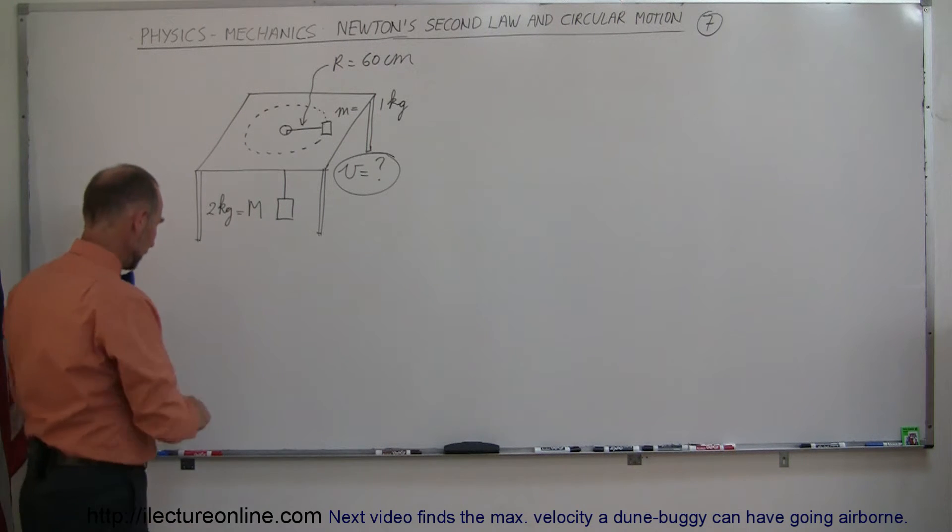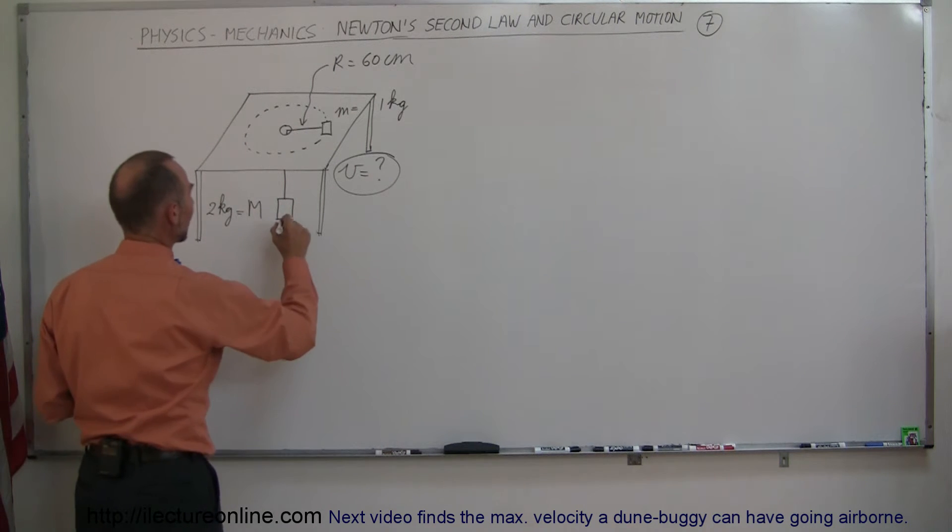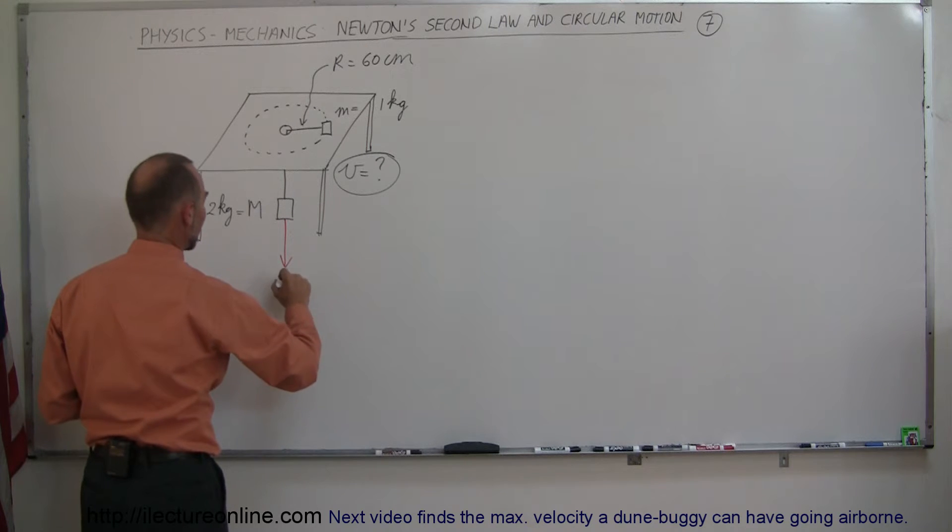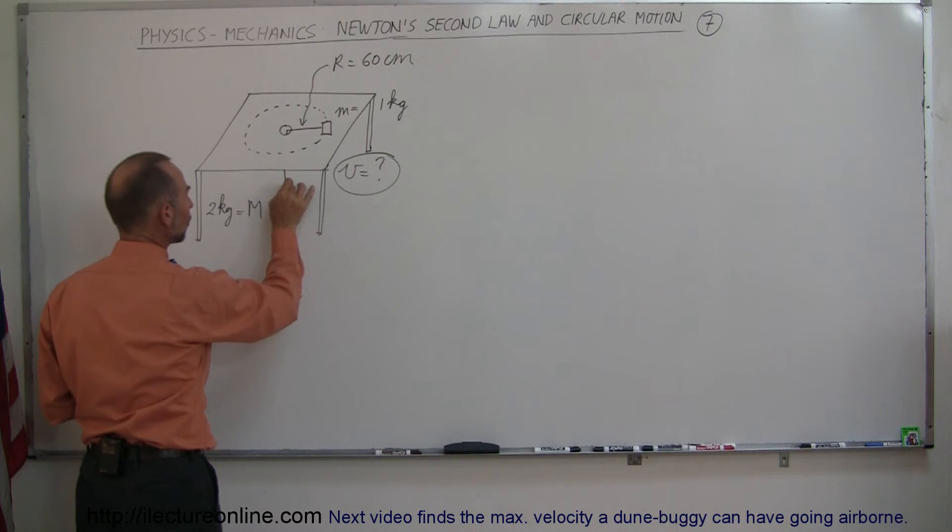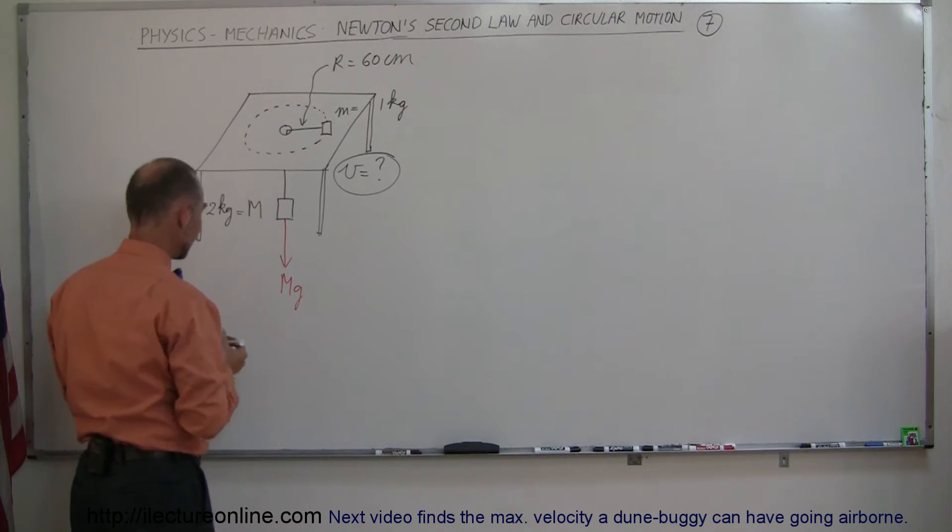Okay, well let's think about it. We have the weight of this big object right here which is a big Mg and of course that adds tension to this string. So the tension in the string would be equal to the weight of this. So we can say that the tension is equal to the weight of that object.